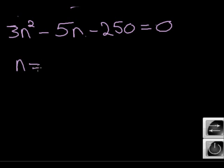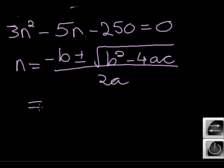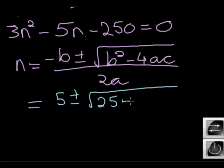In other words, n is equal to minus b plus minus the square root of b squared minus 4ac over 2a. B is negative 5, so minus b is positive 5. Plus minus the square root of b squared is therefore 25 minus 4 times a times c. And 3 times negative 250 gives me positive 3000. Divided by 6.